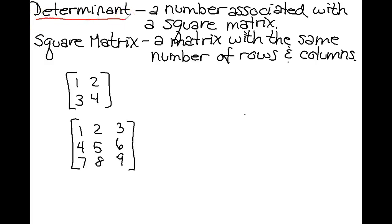A determinant is a number that is associated with a square matrix. And a square matrix is a matrix with the same number of rows and columns. So let's take a look at the square matrix.